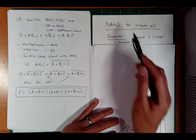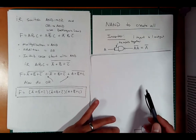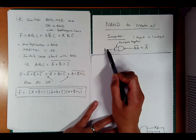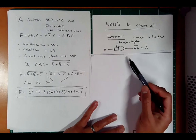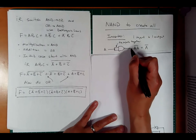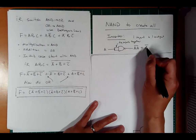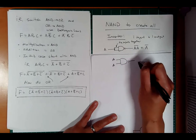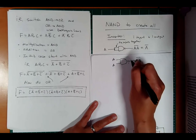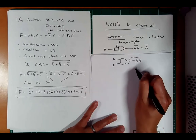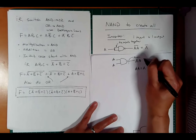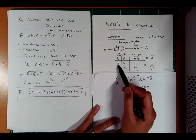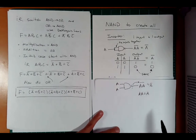How would we build an inverter with a NAND gate? If you tie the two inputs of a NAND together, A comes in on both inputs. You have A NAND A, which is A times A inverted. Since A AND A equals A, this simplifies to A-bar — an inverter. The truth table confirms: if A is 0 or 1, then A-bar is 1 or 0.